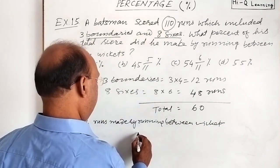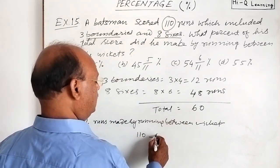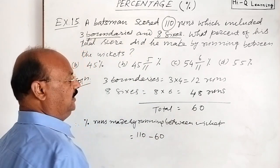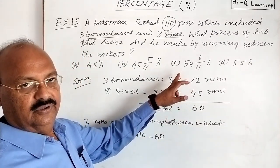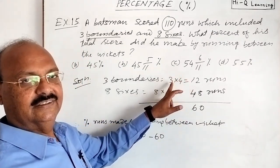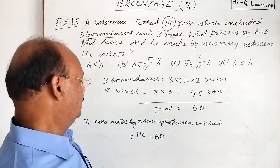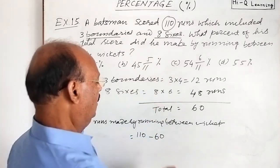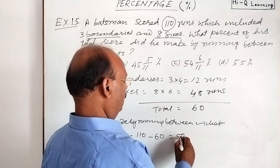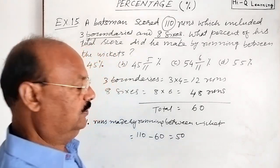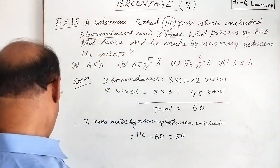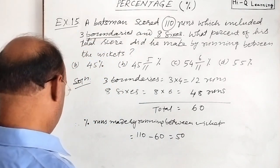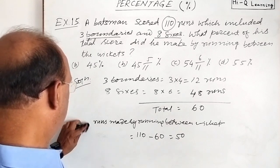Total is 110 minus 60 runs by boundaries and sixes. So 110 minus 60 is equal to 50. So not percentage, simply these are number of runs. Therefore, number of runs.